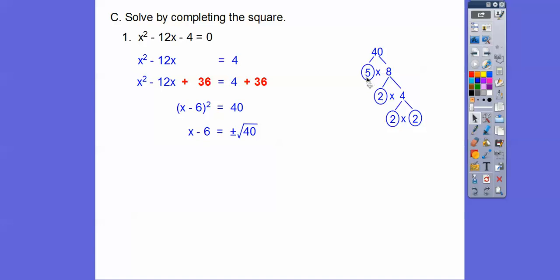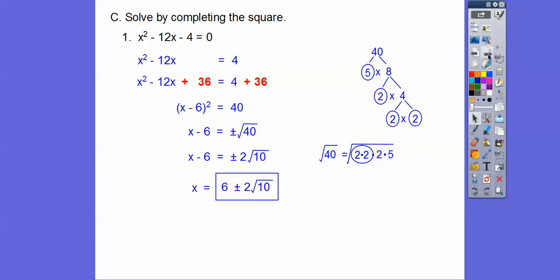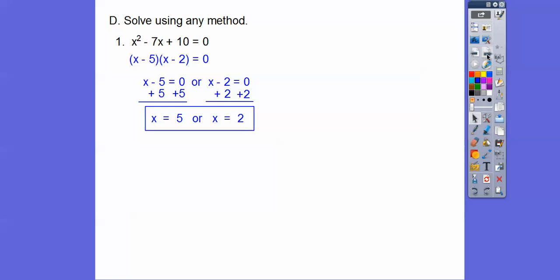So here's 40 right there. So the square root of 40 is the square root of all of those. So a couple of 2s come out and we get 2 root 10. So then add 6 to both sides. So x equals 6 plus or minus 2 root 10. So here let's solve using any method. If we can factor, it's always the best. Factors of 10 that add to negative 7 are negative 5 times negative 2. And set the factors equal to 0 and you solve and piece of cake.